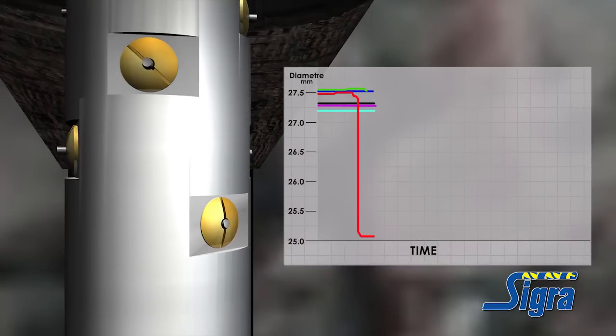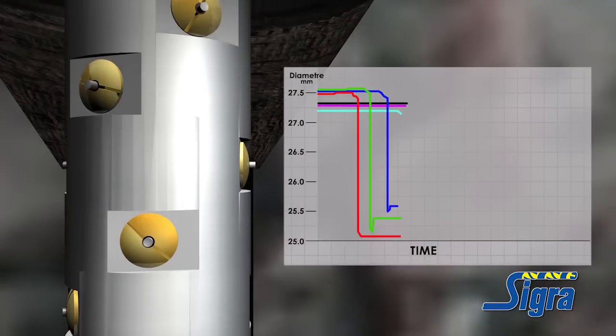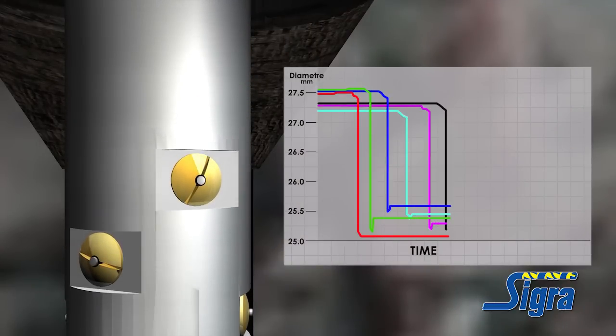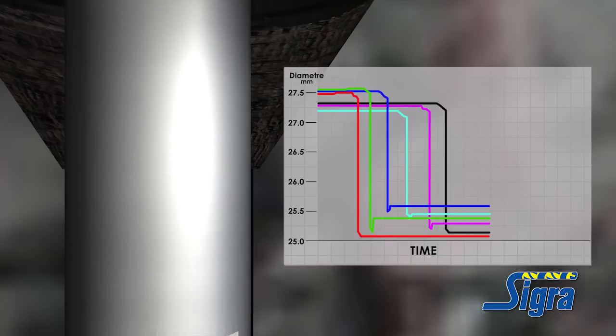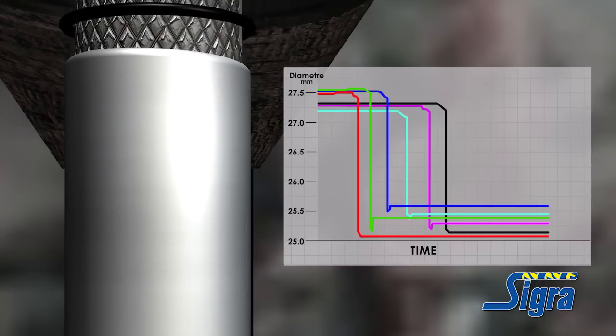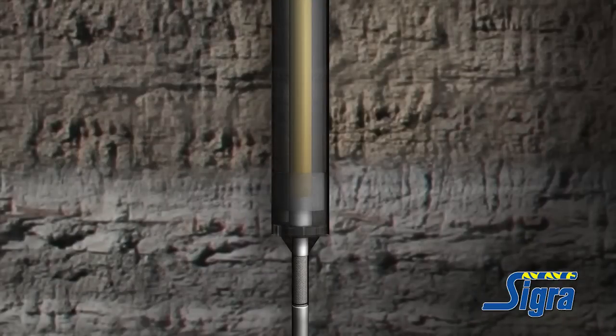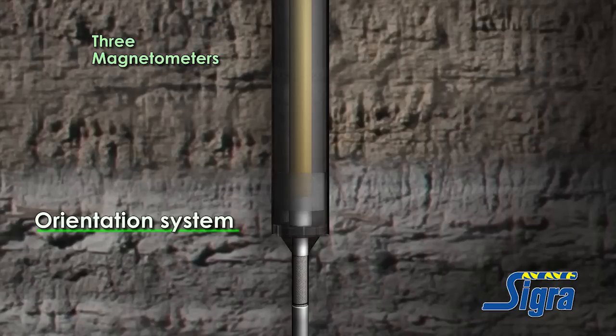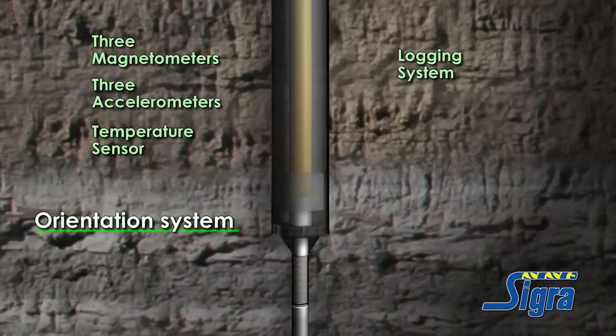The tool measures the pilot hole diameter at six locations through the action of pins which press against the pilot hole wall. The remainder of the stress tool protrudes upwards from the pilot hole and contains an orientation system comprising three magnetometers, three accelerometers and a temperature sensor. It also contains a logging system to record the diameter measurements across the pins and the orientation devices.